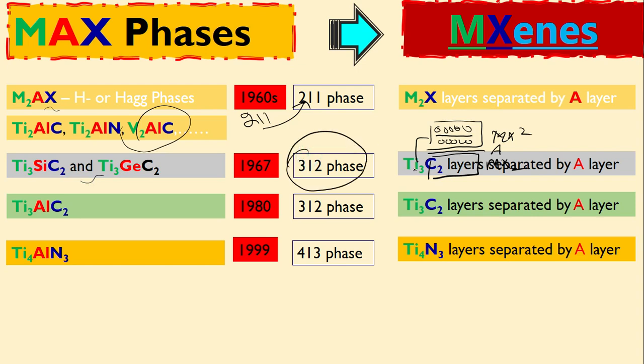So now here is Ti3C2 layers separated by A. This means that instead of 2 here, this is now MX3. If it is now MX3 this means here we have another X layer. For example, one M layer here and this is again X here, and this is again M and again X and again M. So you can see that there are three M layers. This is M, this is X, this is M.